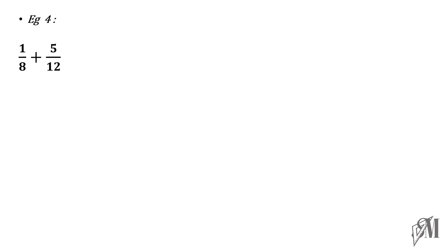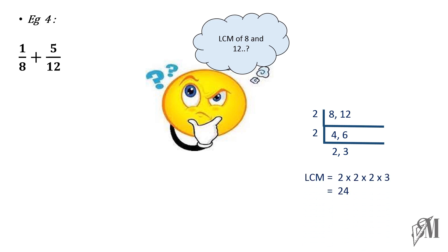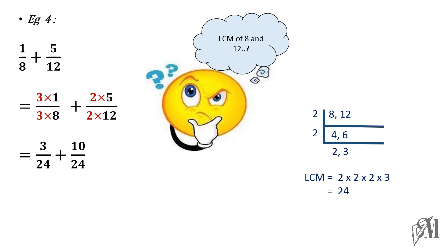Let us move to another example: 1 over 8 plus 5 over 12. In this case, 8 cannot be converted to 12 or 12 cannot be converted to 8 directly. Therefore, you have to find the LCM of 8 and 12. Dividing by 2 you get 4 and 6; dividing by 2 again you get 2 and 3. So, the LCM is 2 × 2 × 2 × 2 × 3, that is 24. Both fractions must be converted to fractions with denominator 24. The first fraction is multiplied by 3 and the second by 2, giving 3 over 24 and 10 over 24. The sum is 13 over 24. This is how you add fractions with unequal denominators — first equate the denominators by multiplying one or both fractions, then add as usual.